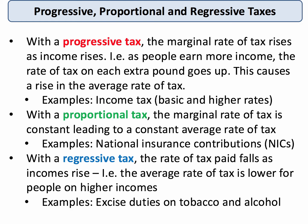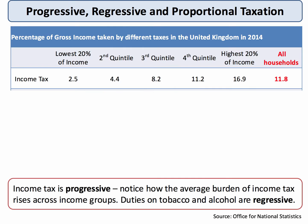With a regressive tax, the average rate of tax in percentage terms goes down as your income goes up. That's quite an important point to really nail. With a regressive tax, the rate of tax as a percentage goes down for people on higher incomes. There's quite strong evidence that items such as duties on tobacco and drink are regressive in nature.